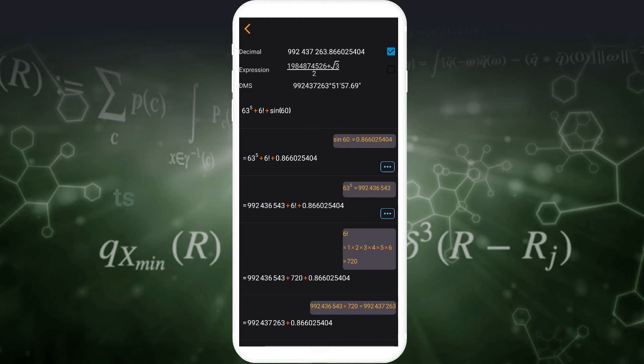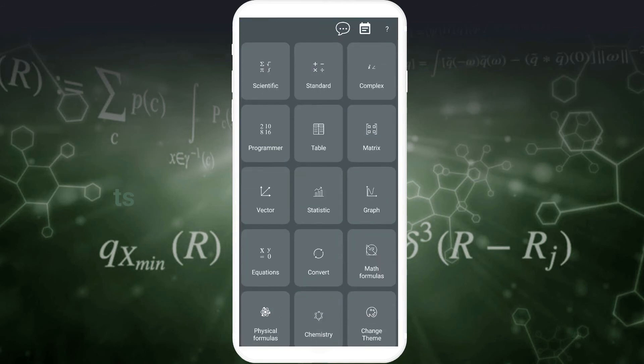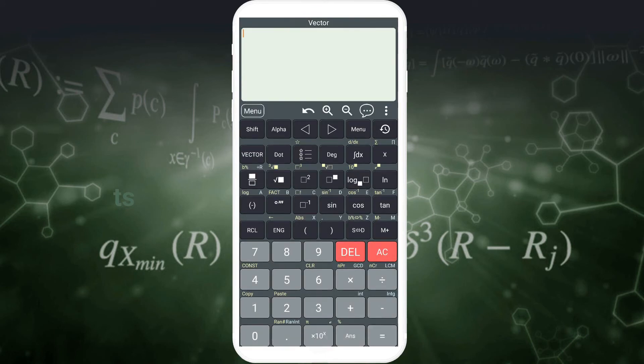Press the back key to return to the original screen. Click the menu to go to other calculation functions such as matrix calculator, vector, and complex numbers.